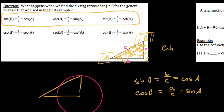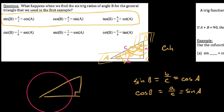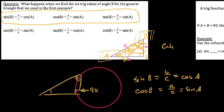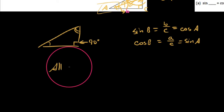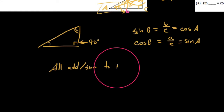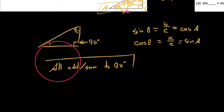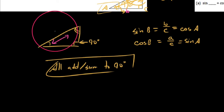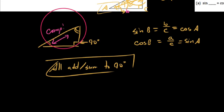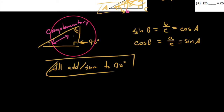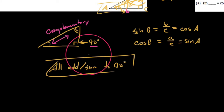One thing to mention: when you talk about the angles in a right triangle, we know we have 90 degrees at the right angle, and all angles in a triangle add up to 180 degrees. So the two acute angles have to be complementary — they add up to 90 degrees, because 90 plus 90 gives us 180 total.